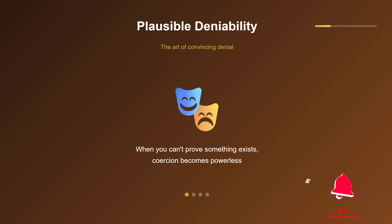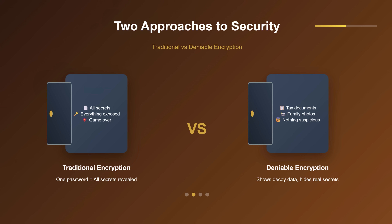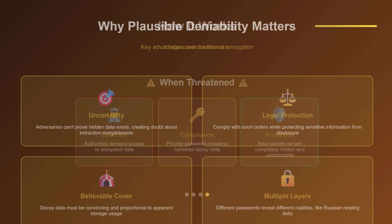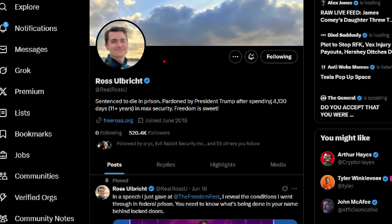Traditional encryption gives you a single key and forces you to open it — everything's exposed once that happens. Deniable encryption creates multiple secret compartments inside, each accessible with a different key. Under coercion, you open one with boring documents and no evidence exists of the other compartments. In high-risk environments, this becomes rather essential. Take Ross Ulbricht, for example.